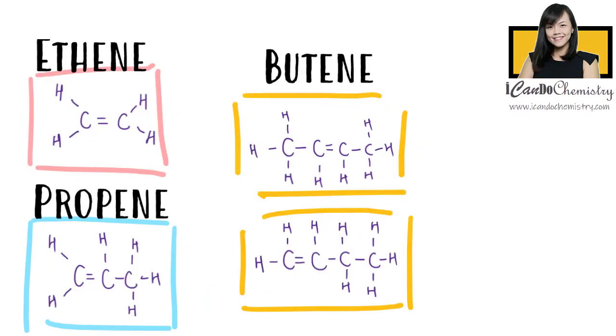If we look at each of these alkenes, you should notice carbon always forms four bonds while hydrogen always forms one bond.